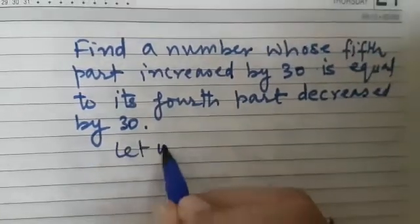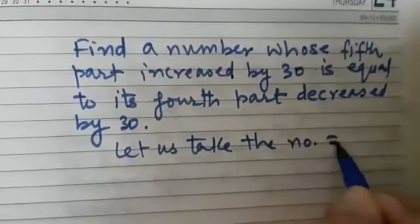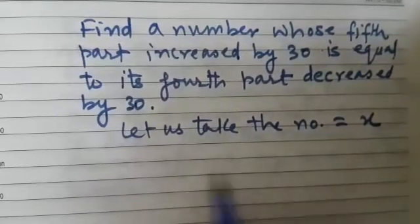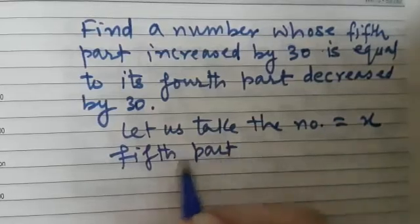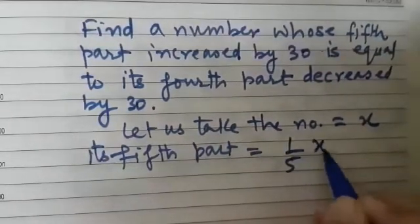Let us take the number equal to x. Now what will be its fifth part? So fifth part of the number will be equal to 1 by 5x.